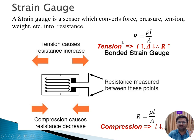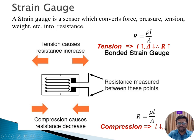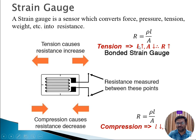We know the concept that resistance is given by R = ρL/A, where ρ is resistivity, L is the length of the wire, and A is the cross-sectional area of the wire. Whenever tension is experienced by the strain gauge, the wire length L will increase and the cross-sectional area A will decrease, which results in R increasing.